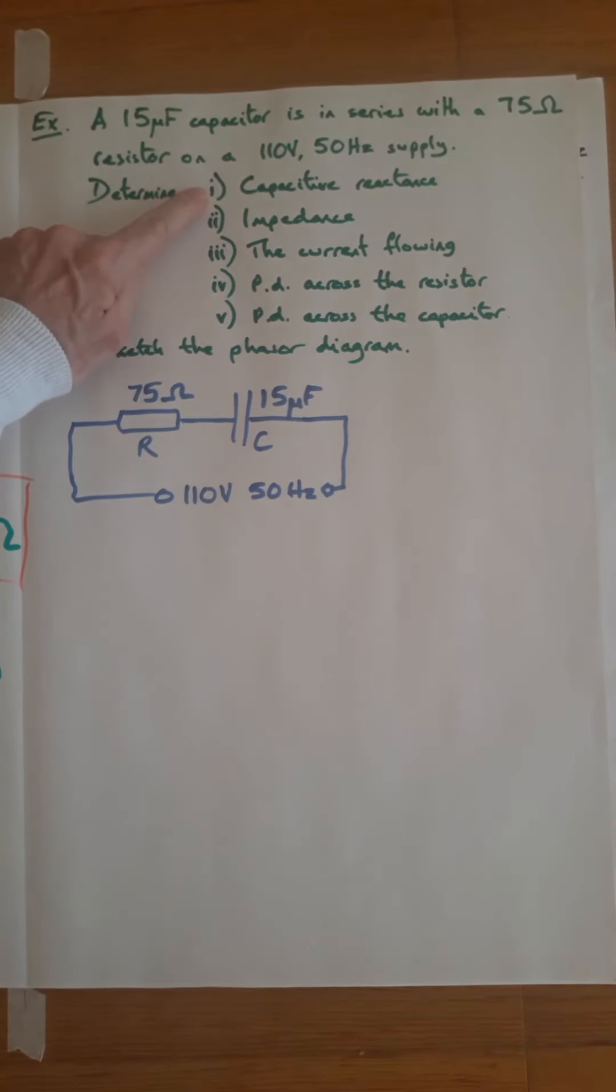Determine: one, capacitive reactance; two, impedance; three, the current flowing; four, potential difference across the resistor; five, potential difference across the capacitor; and finally, sketch the phasor diagram.